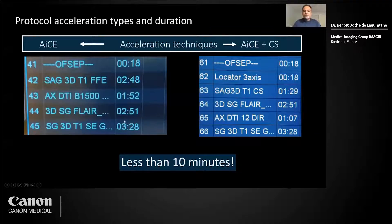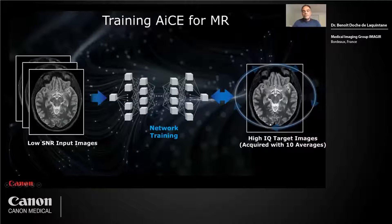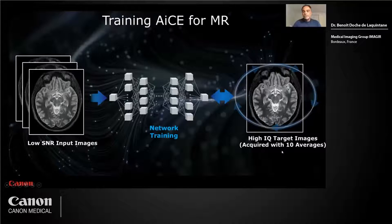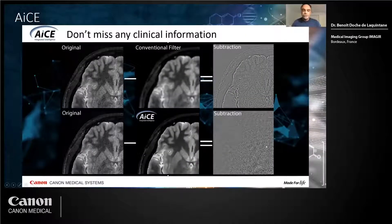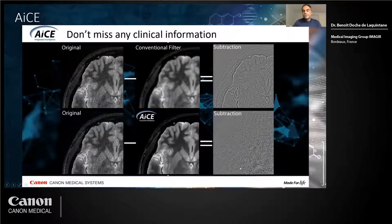The 3D FLAIR with ACE is 2 minutes 51 seconds, and when we use CS on 3D T1 gradient echo or spin echo, it could be 1 minute 30 seconds. The ACE principle is that you use low SNR imaging that you give to a network of artificial neurons trained with high IQ target images. This network is trained to do a subtraction of the noise. With a conventional filter, after the subtraction you miss some clinical information. With ACE, only the noise is cleaned up and no clinical information is missing.